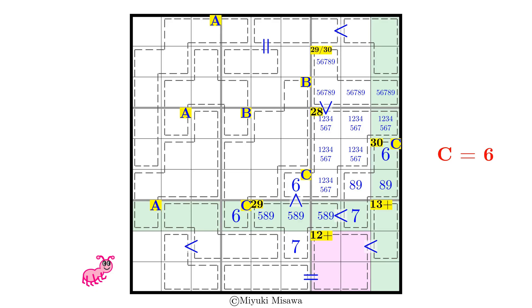The next cage is at least 13, but its upper cell can already contain at most a 4. So the sum is 13, the lower cell is 9, and the left cage sums to 12. The remaining two cells in the box are 5 and 8.